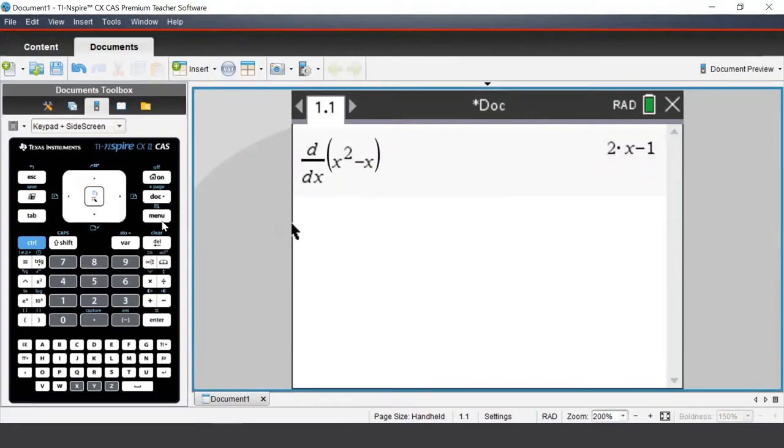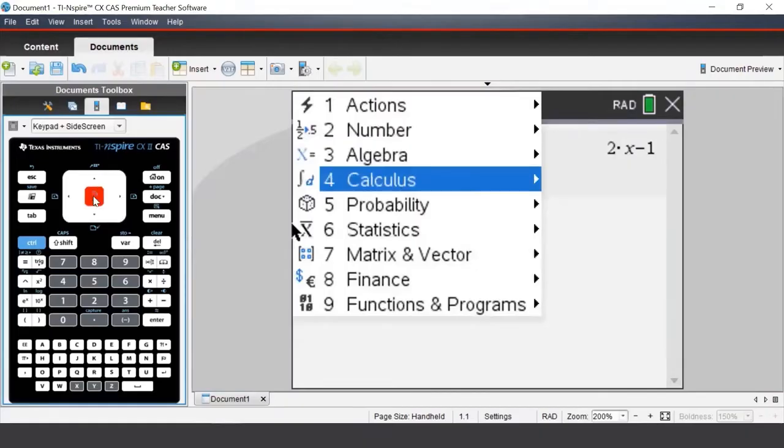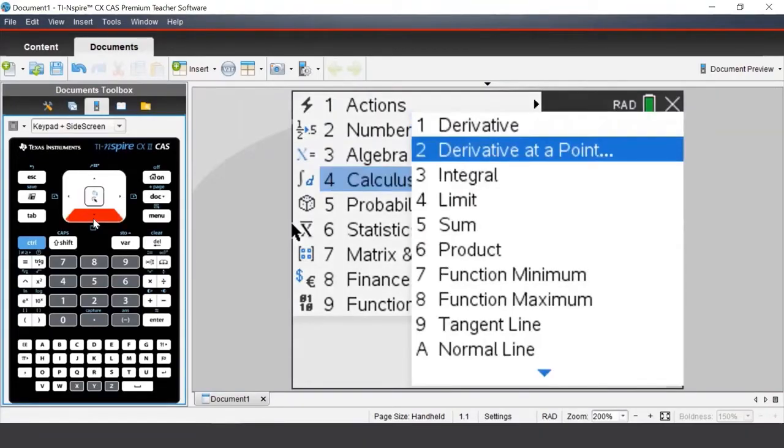If we would like to find the derivative at a point, we can go to our calculus menu and select the second option, derivative at a point.